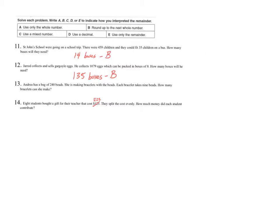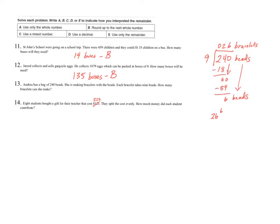Question 13 says Andrea has a bag of 240 beads. She is making bracelets with the beads, and each bracelet takes nine beads. How many bracelets can she make? I have 240 beads split into groups of nine — each group equals a bracelet. Doing division: 9 goes into 24 twice; 9 goes into 60 six times. I have 6 beads left over. Can I have 26 and six ninths bracelets? No — I can't have part of a bracelet. These 6 beads are not enough to make a complete bracelet. So I ignore the remainder and have only 26 complete bracelets — only the whole number, Strategy A.